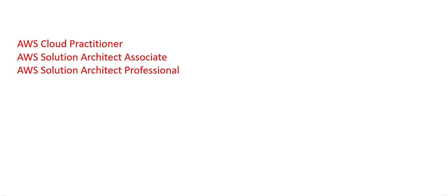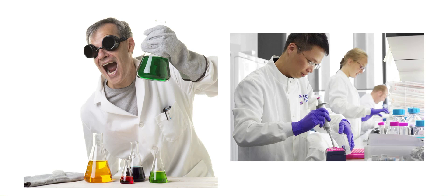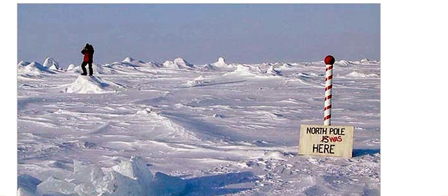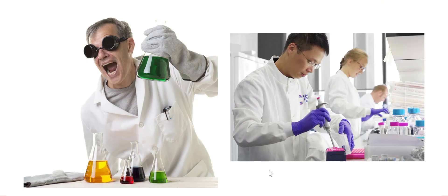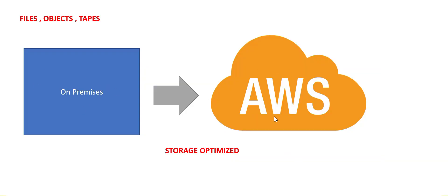Why do we use compute optimized Snowball Edge? Suppose a group of scientists are going to the North Pole for some research. Apart from being very cold, there is no internet. These scientists will collect data but cannot send it to AWS for processing because there is no internet or very limited internet, so they will need compute power also. If we give them a compute optimized Snowball, they can collect data and run compute programs — they'll be there for a few months. That's why it's called edge.